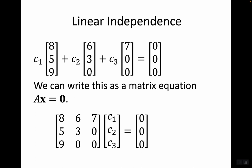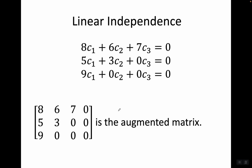So here's our equation. We can write this as a matrix equation, Ax = 0. This is our matrix A that we were talking about earlier. We're going to call this our vector x, and this is the zero vector. If you multiply this out, you'd end up with: 8c1 + 6c2 + 7c3 = 0, 5c1 + 3c2 + 0c3 = 0, 9c1 + 0c2 + 0c3 = 0. If you represent that system as an augmented matrix, this is going to be your augmented matrix.